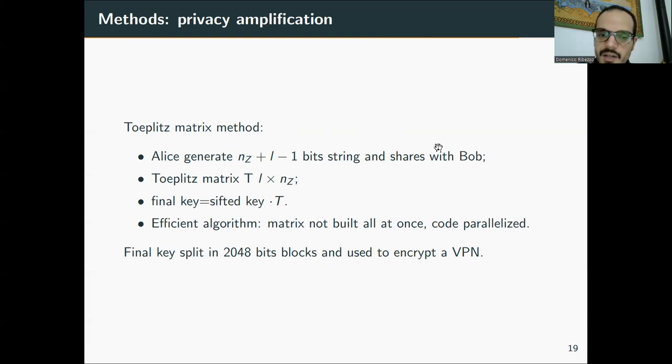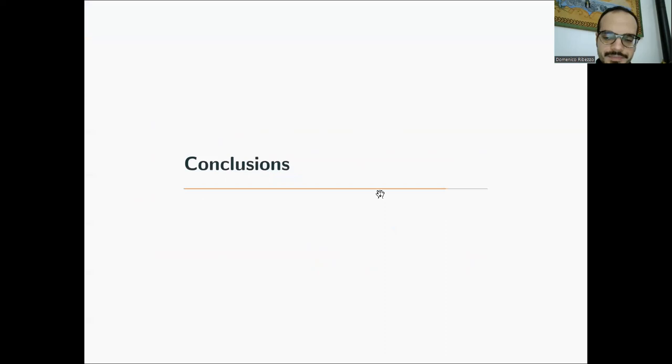An interesting thing of our algorithm is that it was efficient because the matrix was not built all at once and the code was parallelized. So it was pretty fast. And at the end the key was split into 2048 bits blocks and was used to establish a VPN. And the key was changing often.